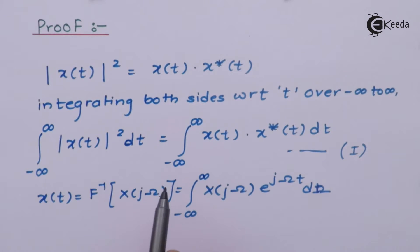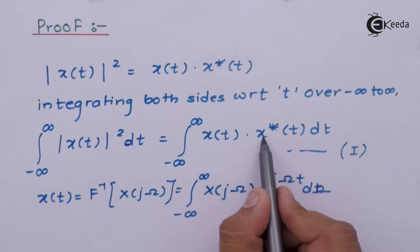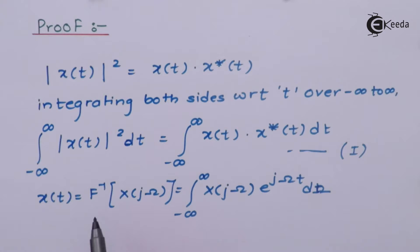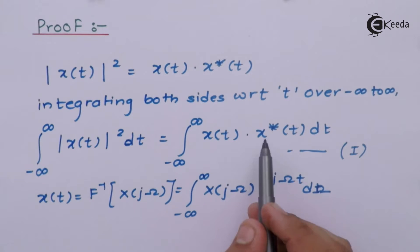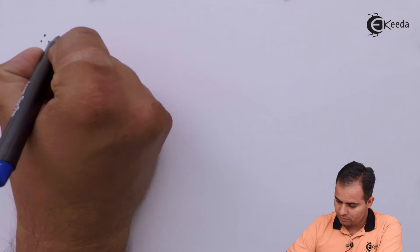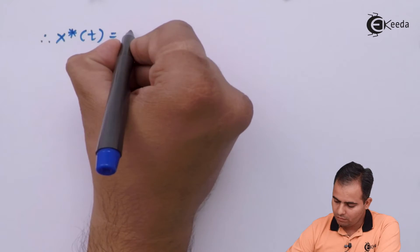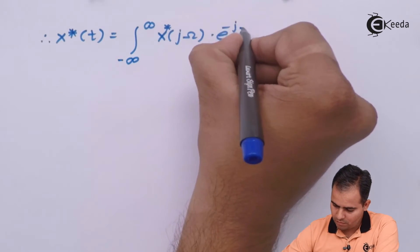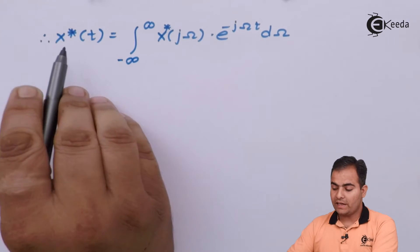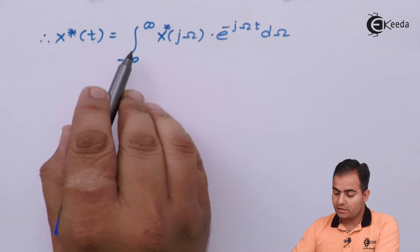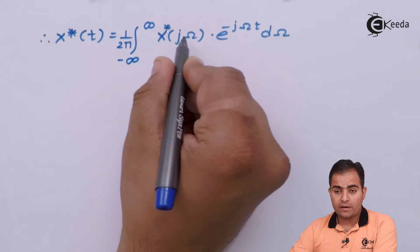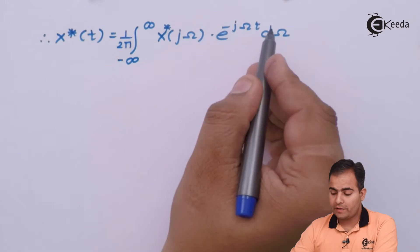We can write the same thing for the complex conjugate value of x(t) as well. The inverse Fourier transform formula for x*(t) will be: the integration from minus infinity to infinity of x*(jω) into e to the power minus jωt, multiplied by 1 upon 2π, dω.